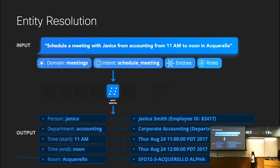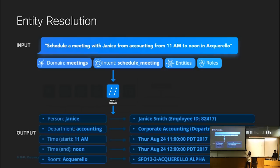Back to our scheduled meeting example, we have all these entities. The resolution component will resolve the text 'Janice' to the full person name Janice Smith with an employee ID, Accounting is resolved to corporate accounting with the department ID, the times are resolved with the time zone, and Aquarello, the room name, is resolved to its full form.